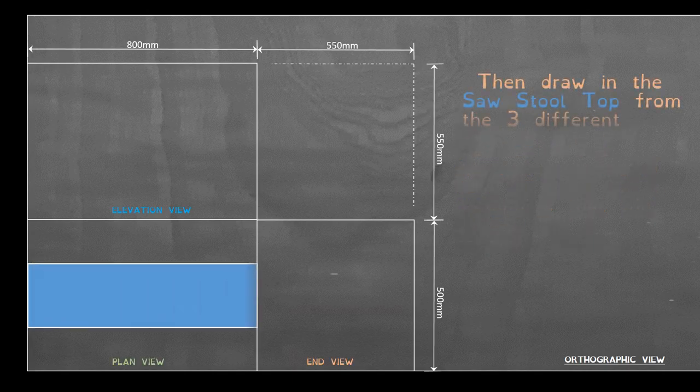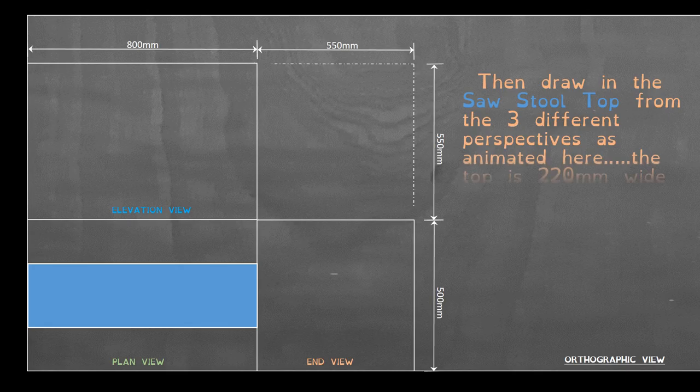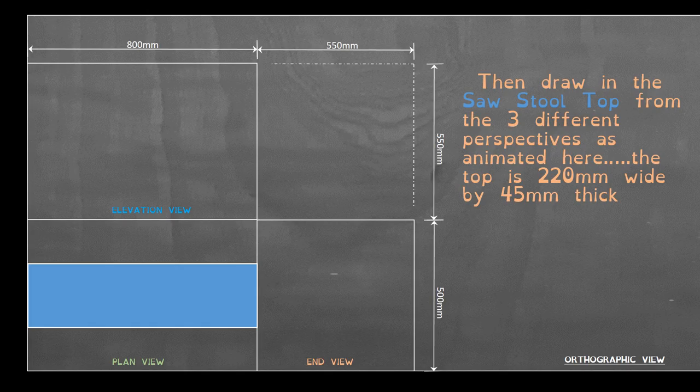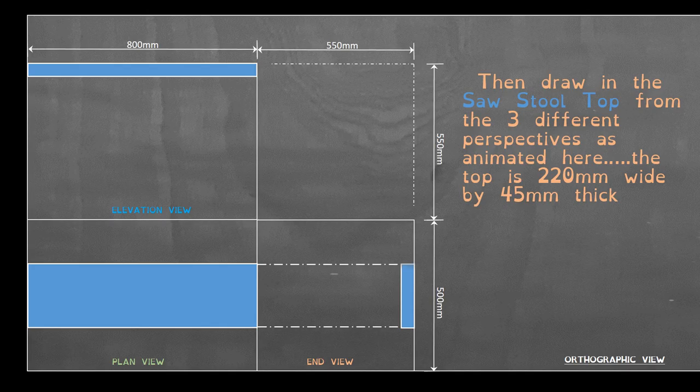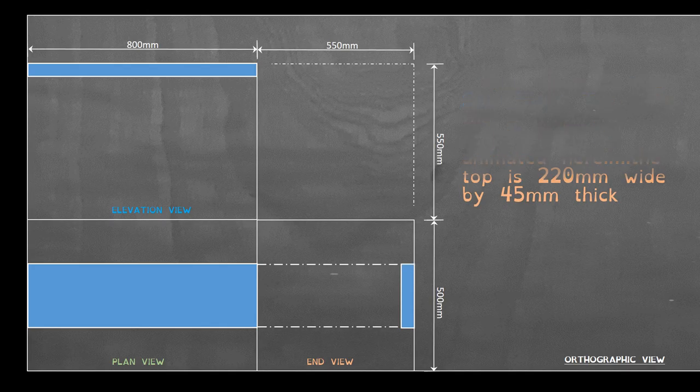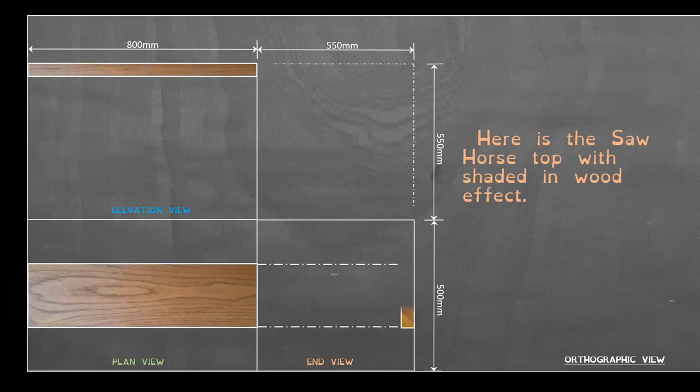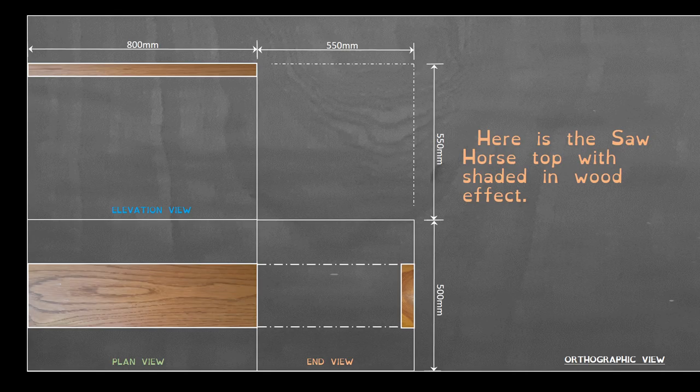Then draw the sawstool top from the 3 different perspectives as animated here. The top is 220mm wide by 45mm thick. The top is shown in blue in the 3 different views. To give some realism to the drawing I have shaded in the top with a wood effect.